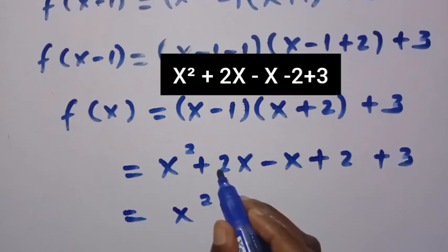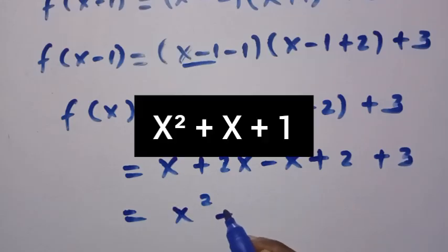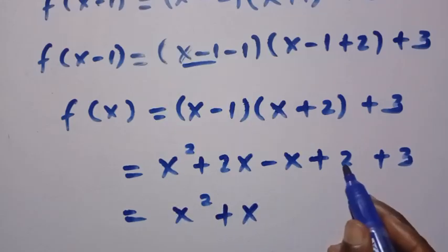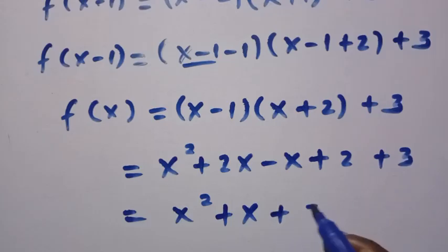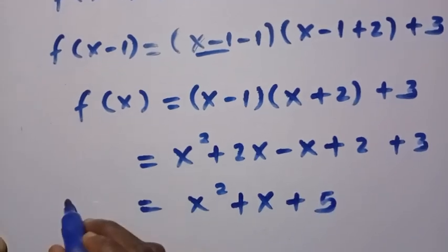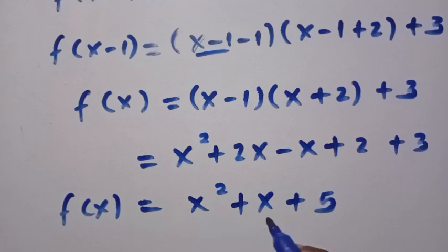So after having this, we have x squared plus 2x minus x, that gives us plus x, then 2 plus 3, that is 5. This shows that our f of x here is giving us x squared plus x plus 5. This is the first way of solving these functional equations.